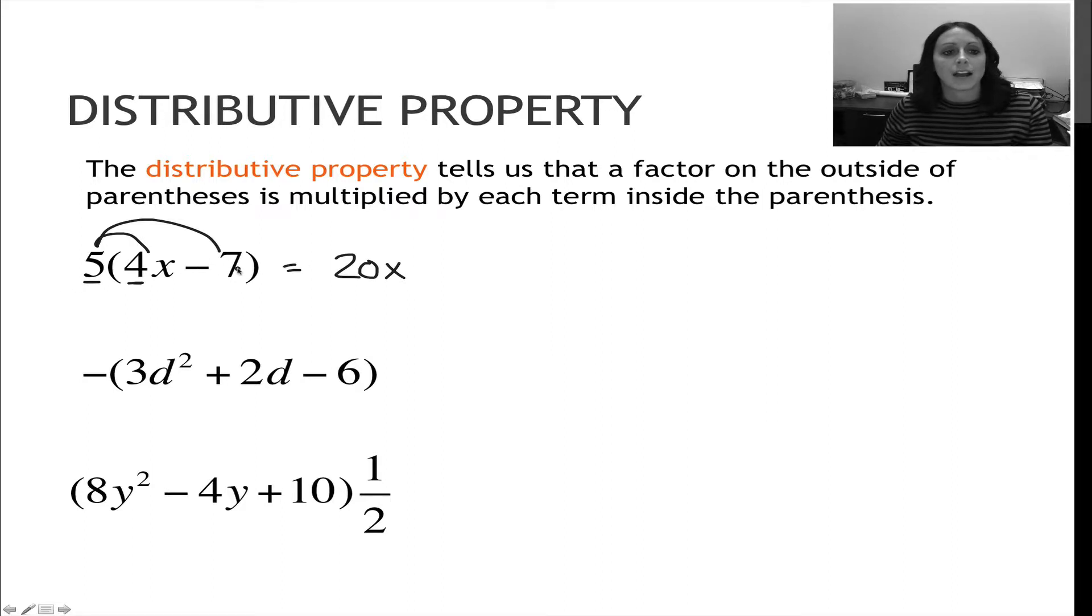For my second one, I've got 5 times minus 7, which is minus 35. So that's using the distributive property. That's all I can do here unless they tell me the value for x.